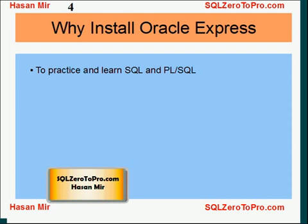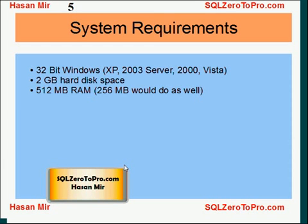For system requirements, I'm only going to show the installation process for Windows, but you can also install it on Linux. On Windows you need a 32-bit operating system — any flavor: XP, 2003 Server, 2000, or Vista. You can also install it on a 64-bit OS, but the software will only use 32-bit technology. 2GB of hard disk space is required, and 512MB RAM is recommended, though you can also run it on 256MB of RAM.